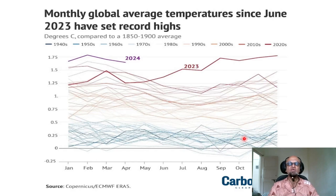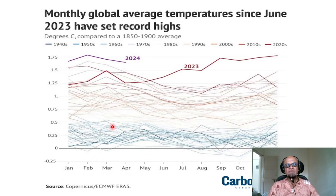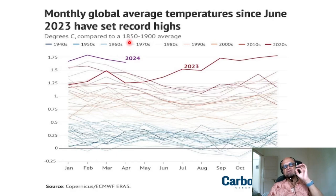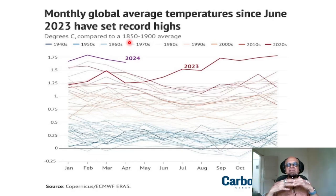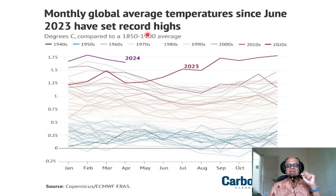The context is that monthly global average temperatures since June 2023 have set records. You are looking at monthly global temperatures going from January to December for the 1940s, which are down here, and the 1950s, which began to get warmer. These are anomalies with respect to a baseline from 1850 to 1900. You take all the Januaries between 1850 and 1900 and make a mean January — that's the climatology of that baseline. Do the same for February, March, and so on, and look at the deviations of each month from the climatology.